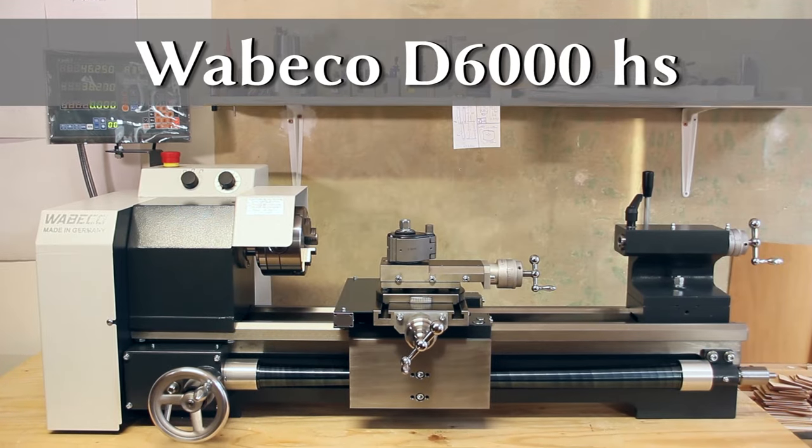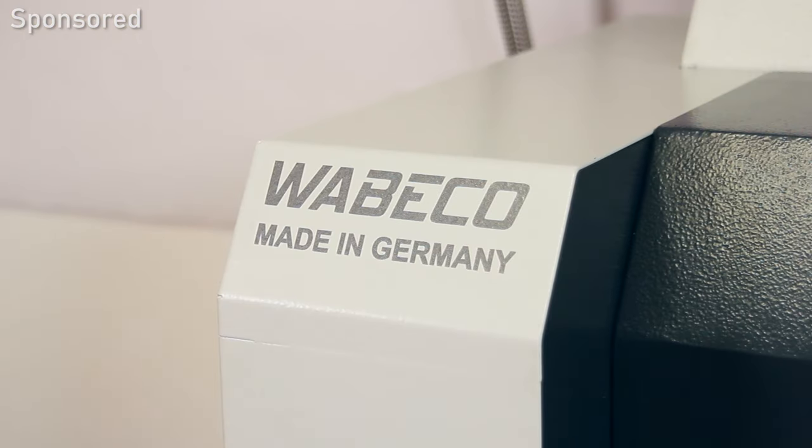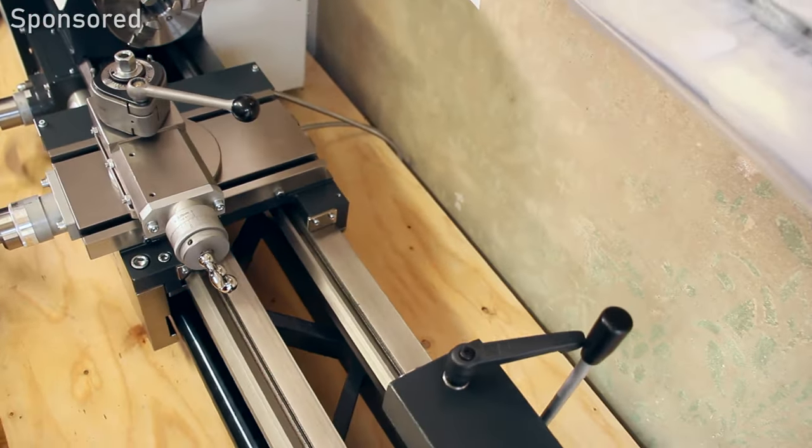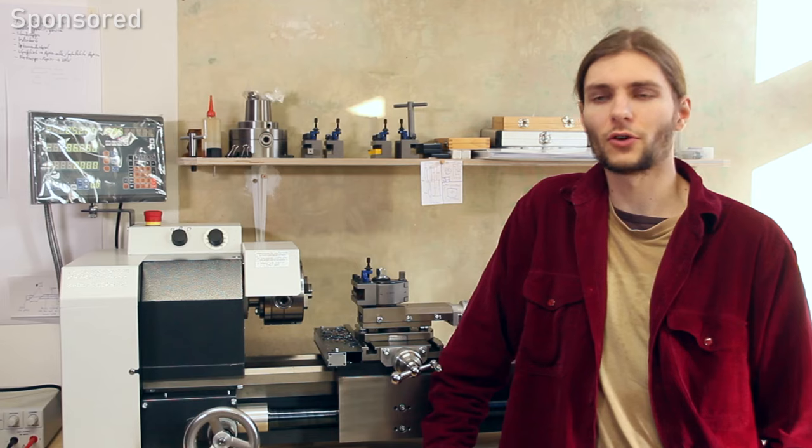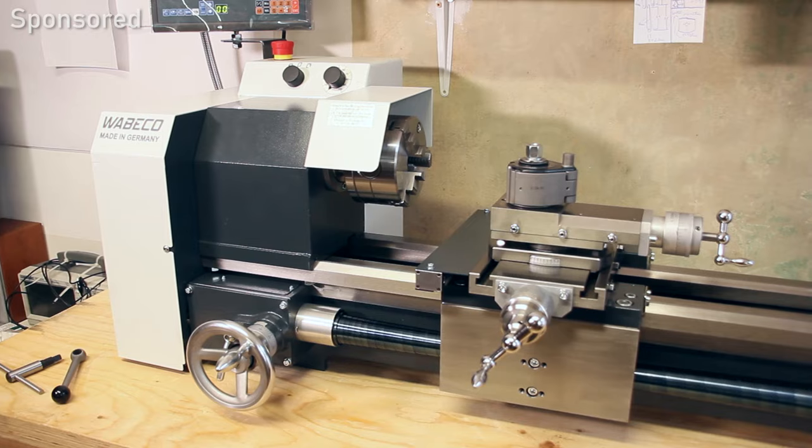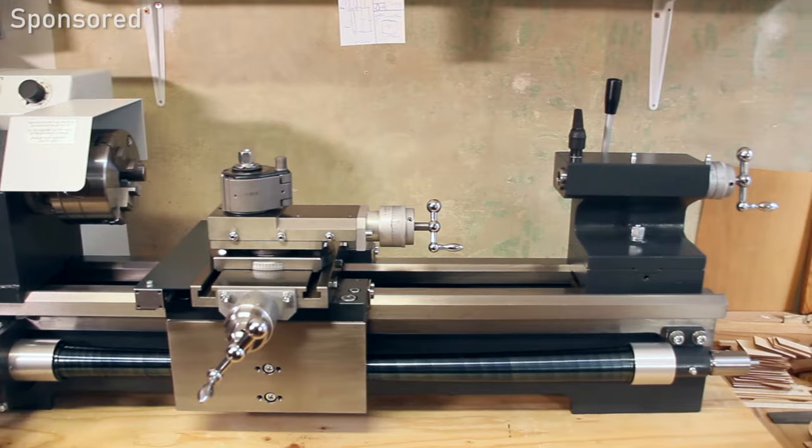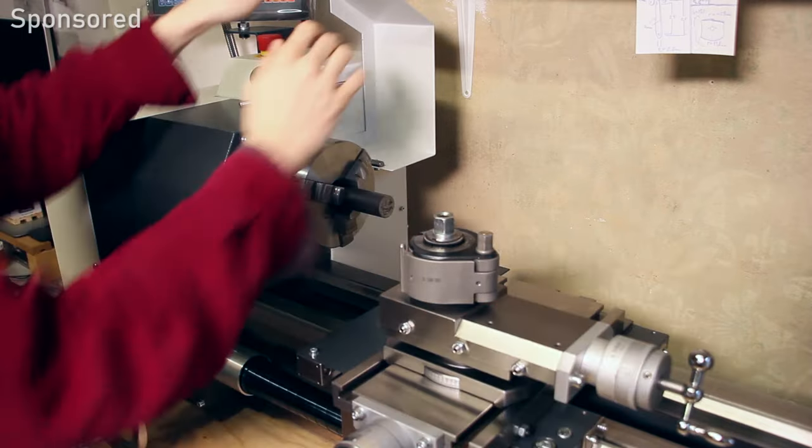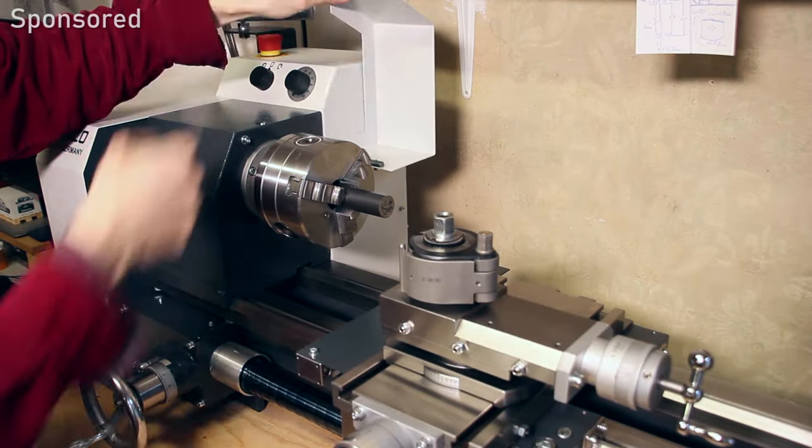Just to be clear, I bought this machine at the regular price, but Wabeco, the manufacturer, agreed to sponsor this video for showing you some more details about the machine. My new machine is a Wabeco D6000HS and it's a precision lathe manufactured by Wabeco in Germany. When researching this new machine I didn't come across a lot of images or videos online, so I thought I might as well change this and give you a little bit of an overview. The machine is 1.2 meters long, the distance between centers is 600 millimeters, and the largest workpiece diameter you can turn above the bed is 270 millimeters, which is plenty enough for the kind of work I do.